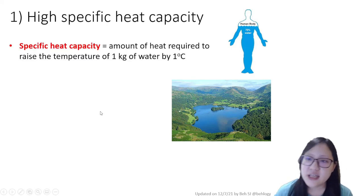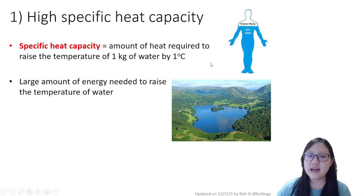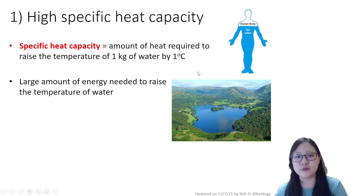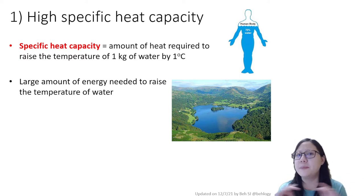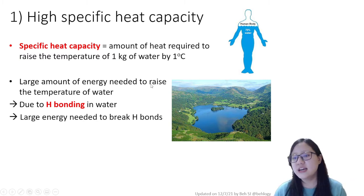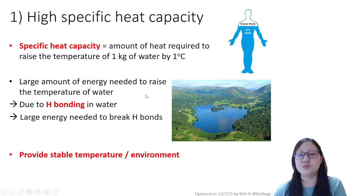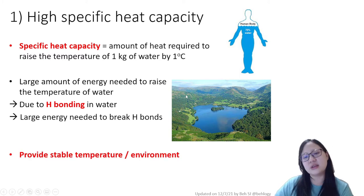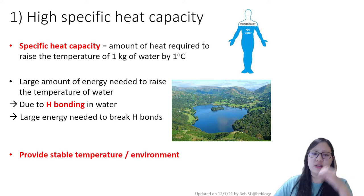Number one, high specific heat capacity. Specific heat capacity is defined as the amount of heat required to raise the temperature of 1 kg water by 1°C. In simple words, this means a large amount of energy is needed to raise the temperature of water by one degree. This is because of hydrogen bonding in water - if you want to raise the temperature, you need a large amount of energy to break the many H bonds inside.